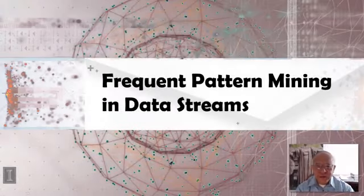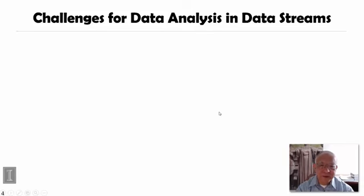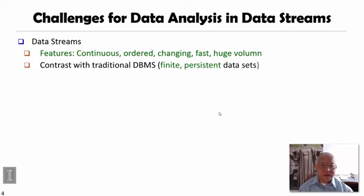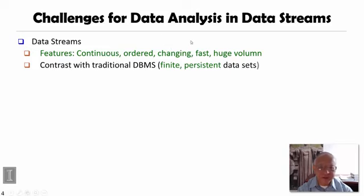Let's first discuss frequent pattern mining in data streams. In the current big data era, besides the huge amounts of data stored in database systems, file systems, and on the web, we also have the internet of things or internet of sensors. In those scenarios, there is a lot of stream data. Stream data typically comes in and goes continuously, ordered in sequence, changing dynamically, arriving very fast in huge volume. This is very different from traditional finite persistent datasets stored in file systems, database management systems, or on the web.